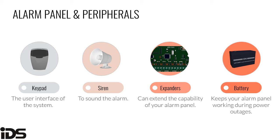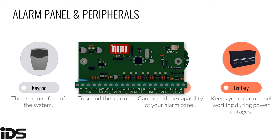Expanders are used to extend the functionality of a security system. Common expanders include wired zone expanders, which increase the number of zones available; wireless zone expanders, which allow adding wireless detectors; and output expanders, which increase the number of programmable outputs. Output expanders are increasingly used for home automation, allowing control of garages, gates, and other devices through remotes or an app linked to the panel.